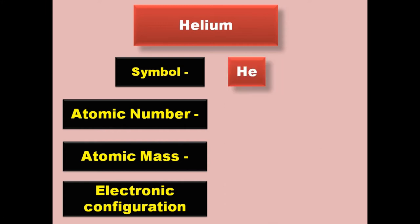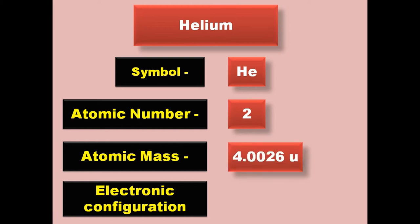Helium has symbol He, atomic number 2, atomic mass 4.0026, electronic configuration 1s2. Helium is a noble gas and exists in gaseous form at room temperature.